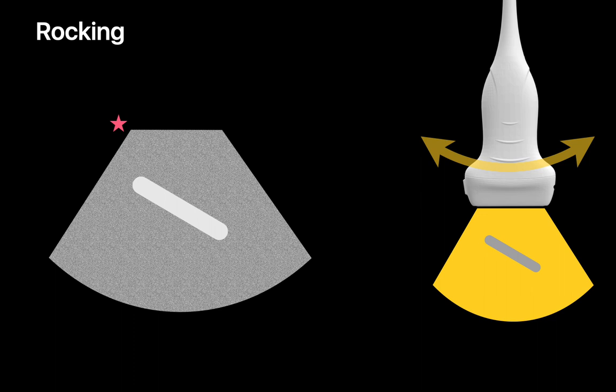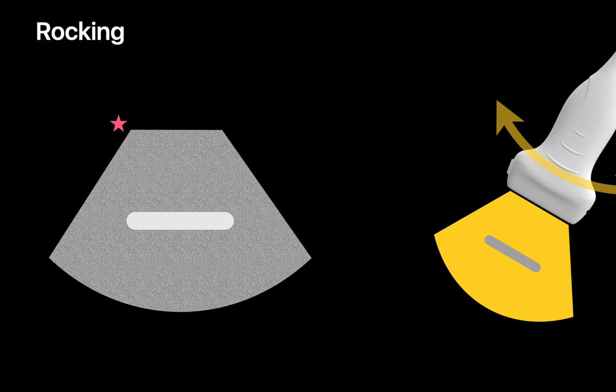Rocking is also helpful for measuring objects. Distance measurements on ultrasound tend to be more inaccurate when different parts of the object are at different distances from the probe head. By pivoting the probe we can bring the object we're measuring into an alignment that's parallel to our probe head and allow us to get a more accurate distance measurement.